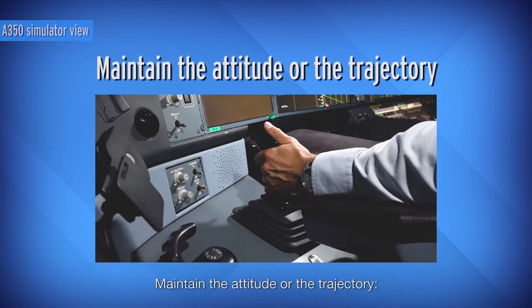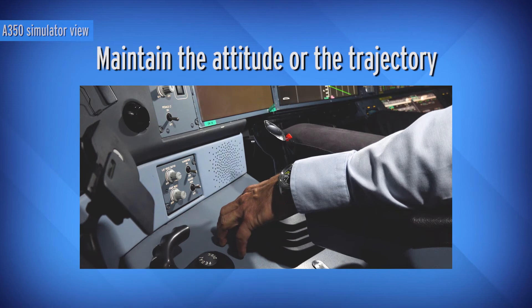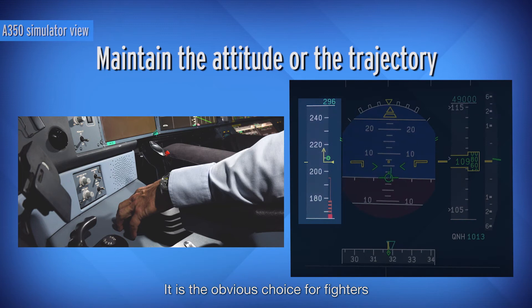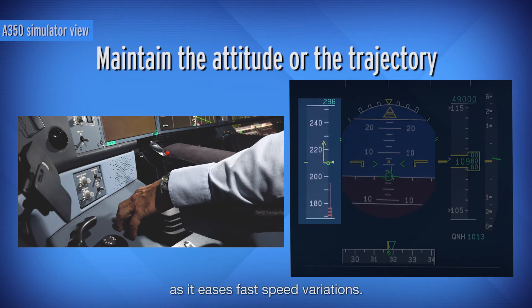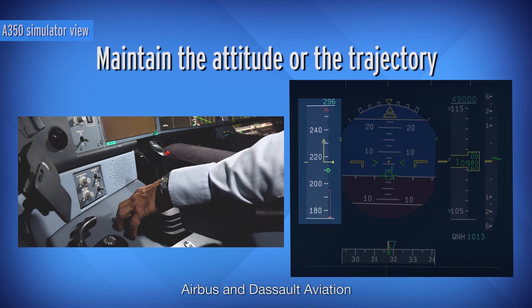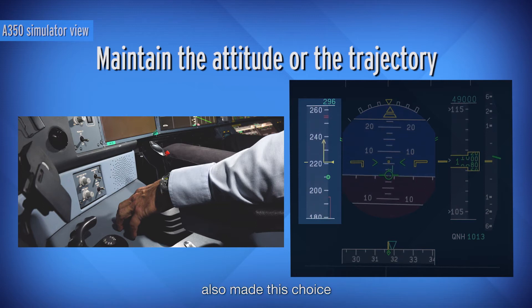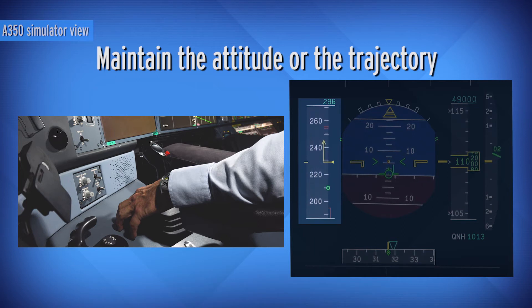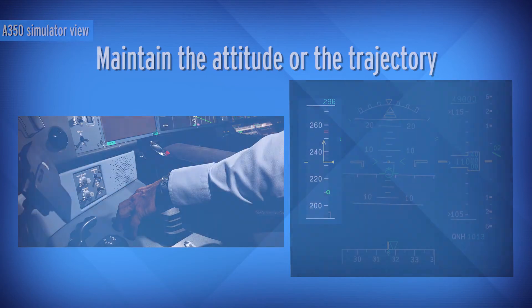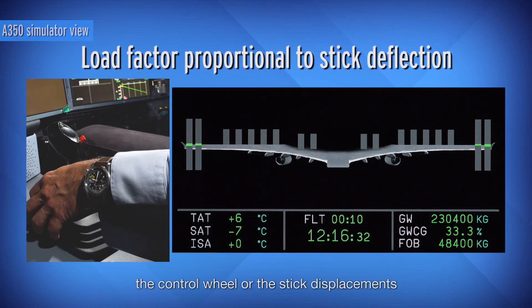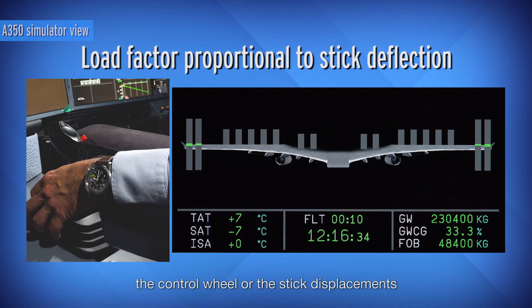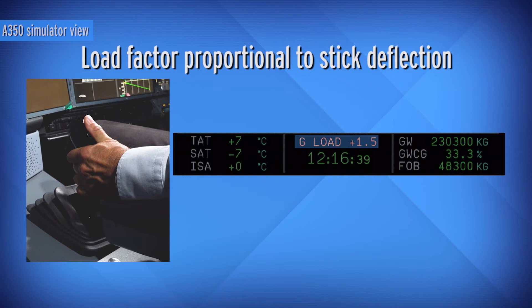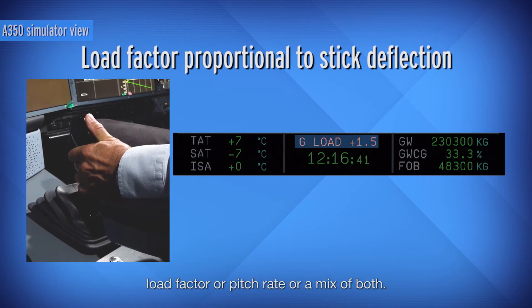The second option is to maintain the attitude or the trajectory. With such a law, there is no need to trim when modifying the speed. It is the obvious choice for fighters as it eases fast speed variations. Airbus and Dassault Aviation also made this choice for their fly-by-wire transport aircraft. At a given speed, the control wheel or stick displacements may command the variation of various parameters such as load factor, pitch rate, or a mix of both.